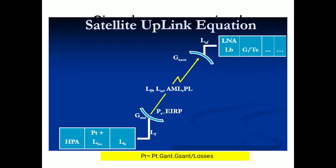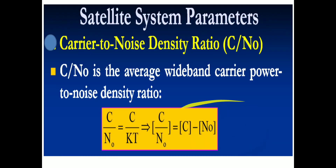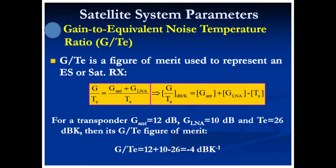For a downlink the formula is the same, except the transmitting power comes from the satellite and the receiving point is the Earth station. Now we derive the signal-to-noise density. We recall that noise density N₀ = kT. The signal power expression gives us C/N₀ in dB as C minus N₀. The gain-to-equivalent-noise-temperature ratio G/T is provided in data sheets and represents the gain of the antenna divided by the equivalent noise temperature.